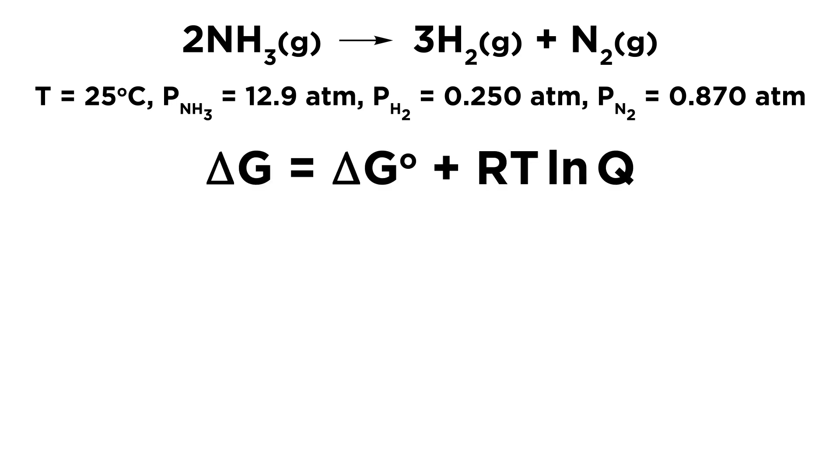So we are going to need to use this equation. We know that delta G, meaning the free energy change of some process under some conditions that are not standard conditions, is going to be equal to the standard free energy change plus RTlnQ, where Q is the reaction quotient. So let's plug in what we know. We know that the standard free energy change is 33.0 kJ per mole. That was given to us.